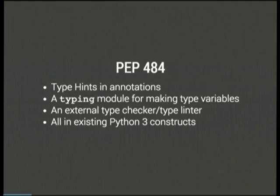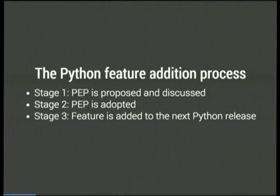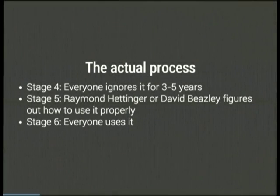All of the type hinting functionality introduced in PEP 484 has been implemented without making any changes to the language itself. For those not familiar with how Python adopts new features, it's a three-stage process: a PEP gets proposed on a mailing list and discussed, the PEP gets adopted, and then the feature gets added to the next Python release. What actually happens is that everybody needs to forget the thing was ever proposed for the first few years of its existence — meaning that by the time people are using something in Python, it's mature and someone in core Python has figured out how to properly use it.